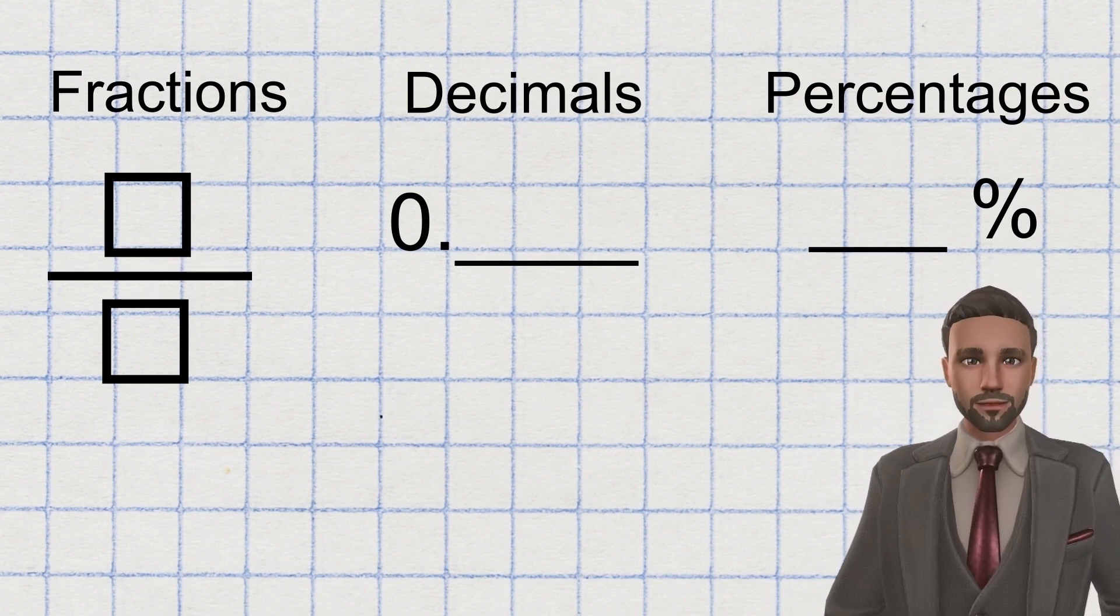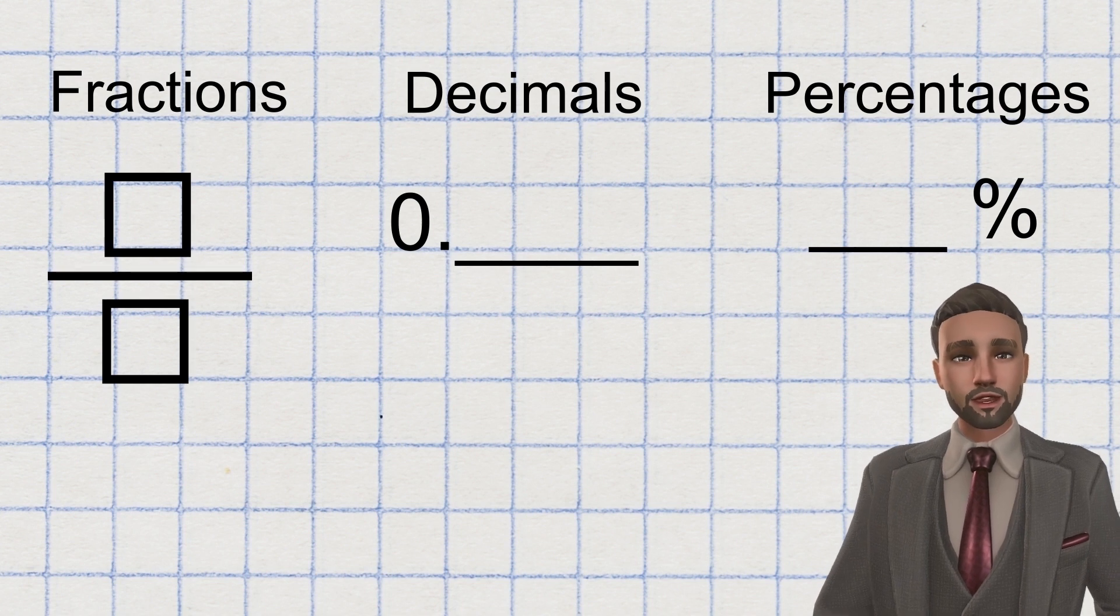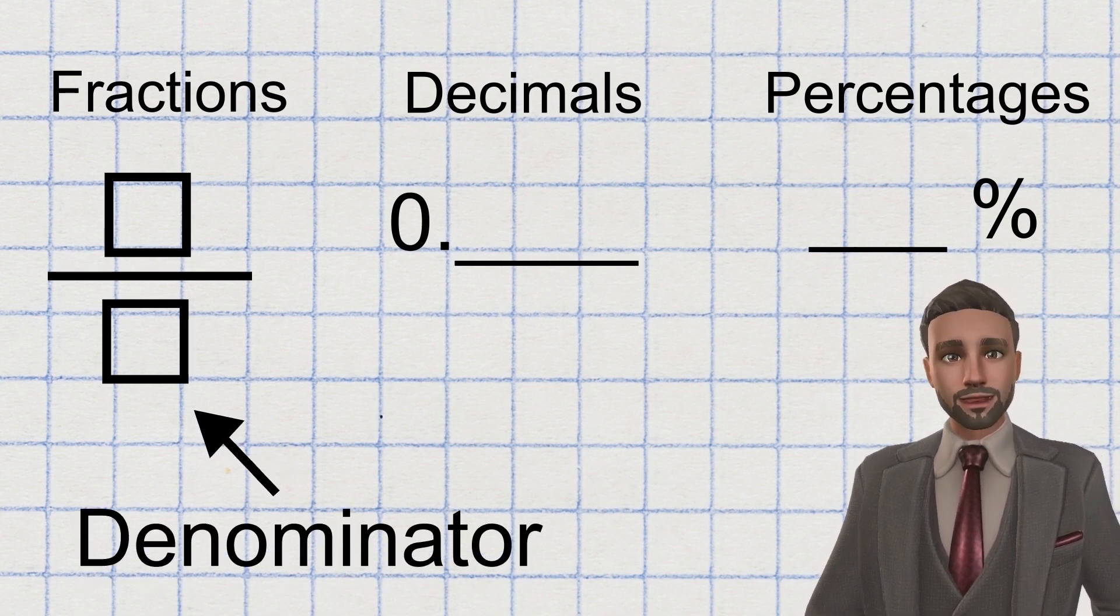All three fractions, decimals and percentages can be split into 100 parts. When they are, writing the equivalent becomes extremely easy. When fractions are split into 100 parts, the denominator reads 100, like so.